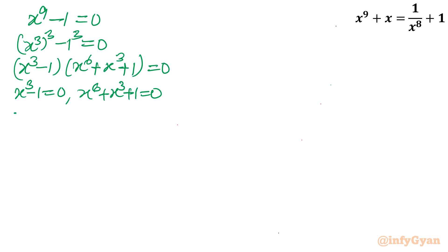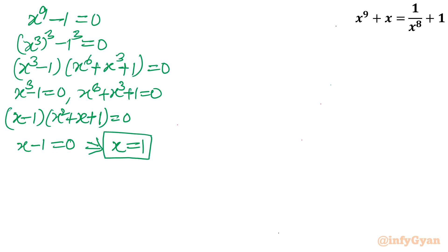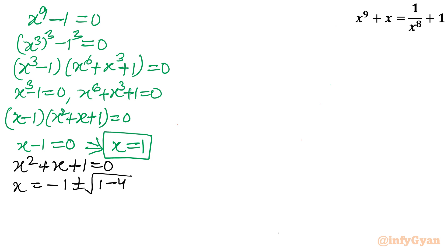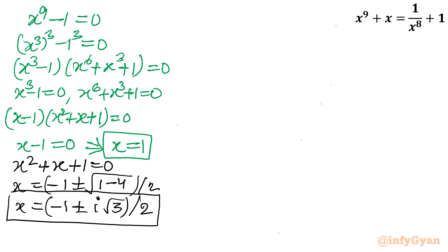From x^3 - 1 = 0, applying a^3 - b^3 again: (x - 1)(x^2 + x + 1) = 0. This gives 3 solutions. From x - 1 = 0, we get x = 1 as the first solution. From x^2 + x + 1 = 0, using the quadratic formula, x = (-1 ± i√3) / 2. So far we have 3 solutions: 1 real and 2 complex.